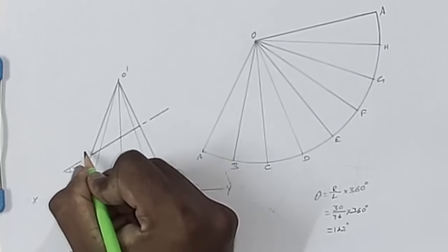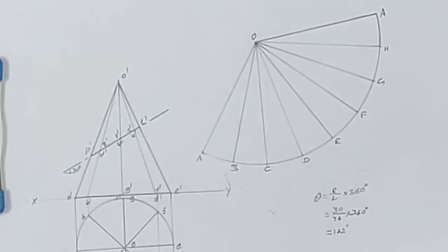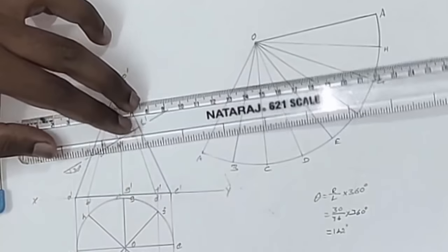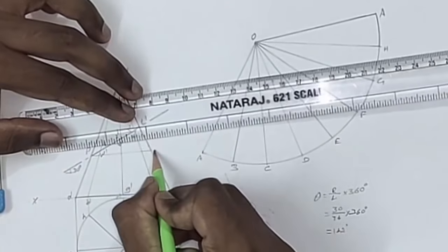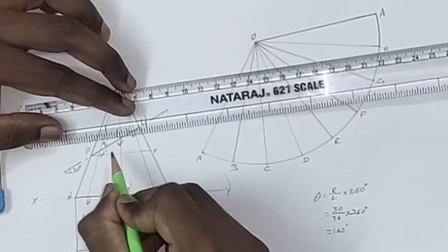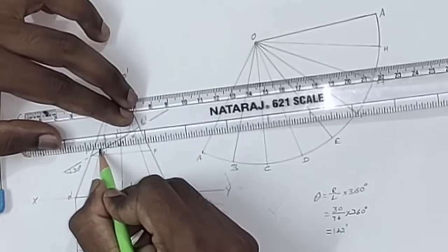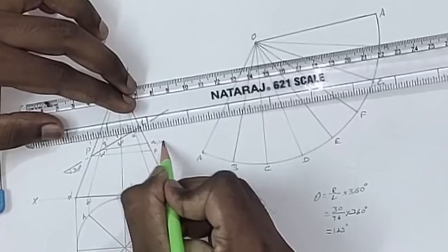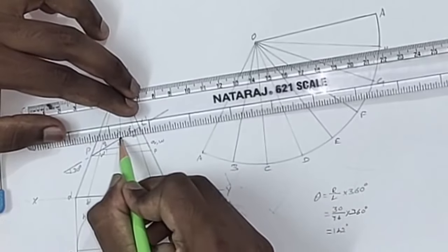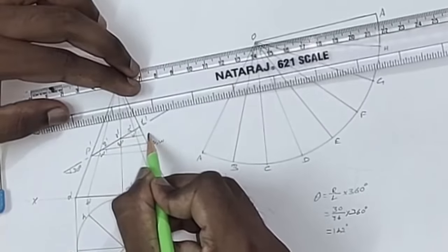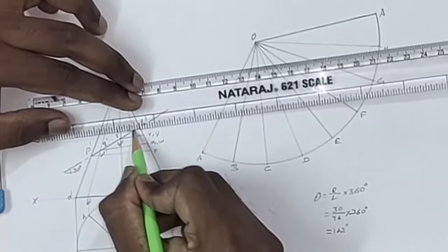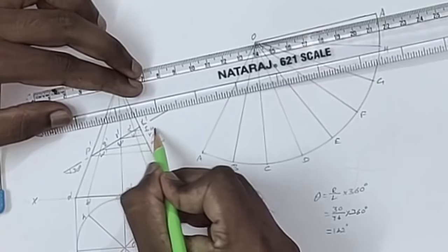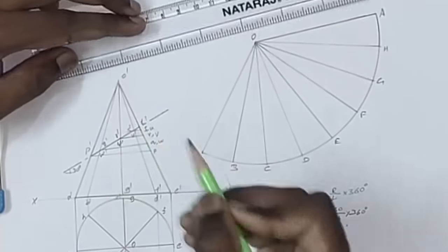Now let us mark the cut points. Horizontally draw lines from all the points. This is the length of point P. This is the length of points Q and W. This is the length of points R and V. This is the length of points S and U, and this is point T.